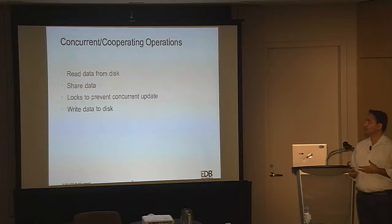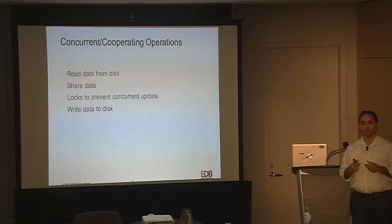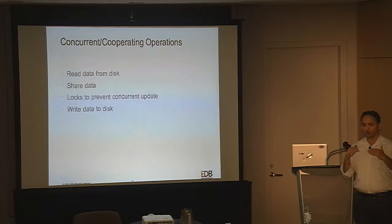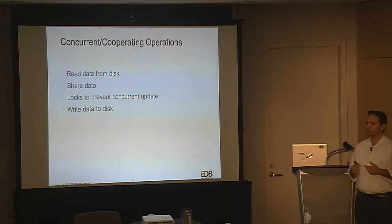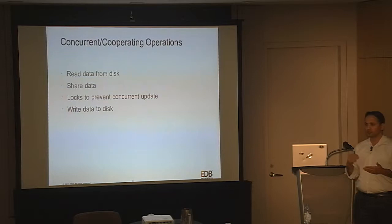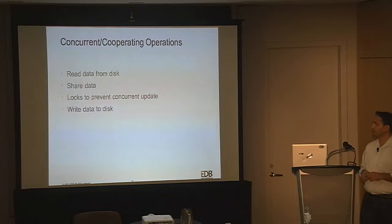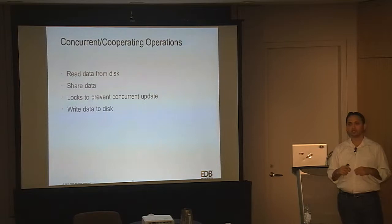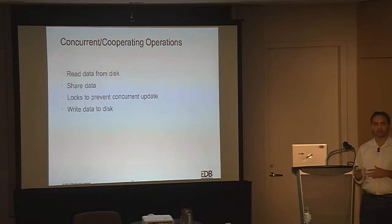In terms of concurrent and cooperating operations, the database has to read data from disk cooperatively — one piece of data read from disk doesn't need to be read again by another backend; that would be wasteful. After reading, backends have to share the data carefully to not step on each other's toes. If you're updating a row, that row should be blocked from another update until the first transaction commits. And finally, writing dirty — meaning modified — data back to disk needs to be done cooperatively, only once, not multiple times.